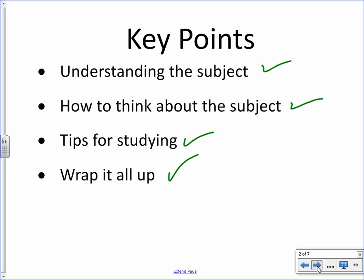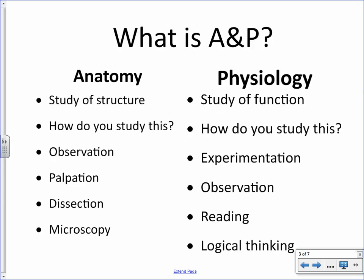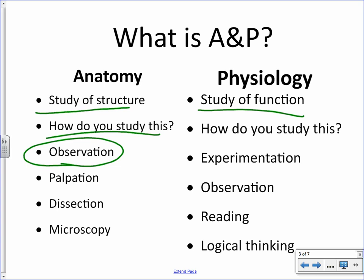Let's talk about anatomy and physiology. I don't want to get too in depth with this just because it's a key part of chapter one as well. The key differences: anatomy is essentially the study of structure, and physiology is the study of function. How do we study structure? That's a lot easier to think about because you basically do so via observation.